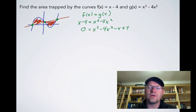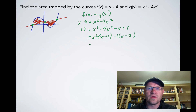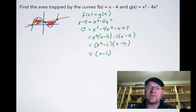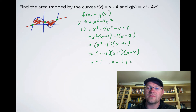Noticing a 4 in both pairs of terms, we factor by grouping: from the first two terms, factor out x squared to get x squared(x minus 4), and from the last two terms, factor out negative one to get negative one(x minus 4). This gives (x squared minus 1)(x minus 4), so the three intersection points are at x equals negative one, x equals one, and x equals four.